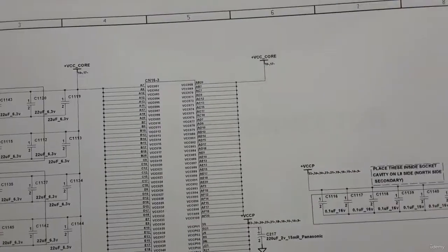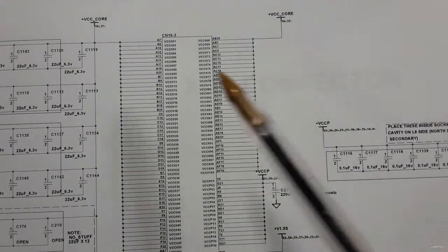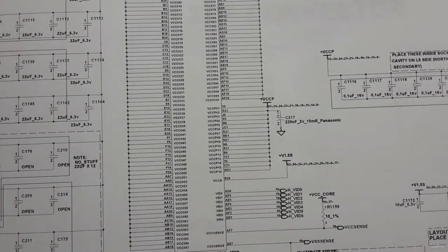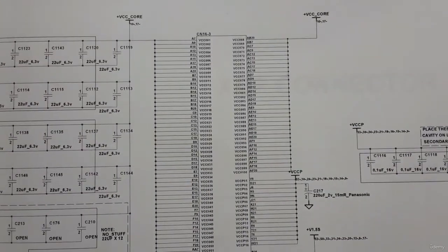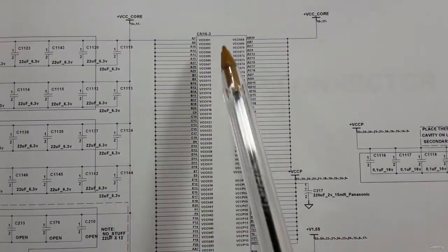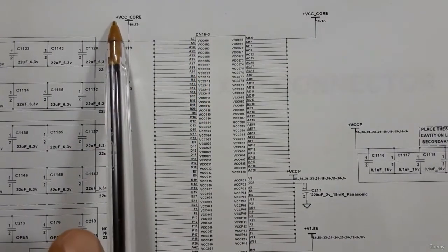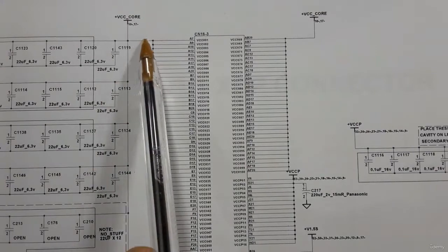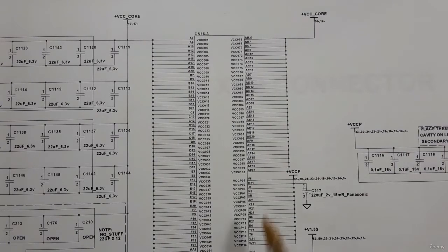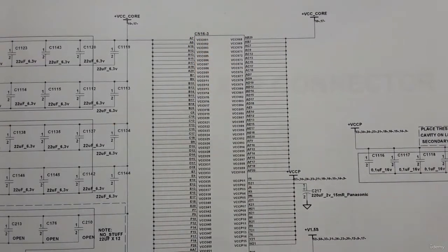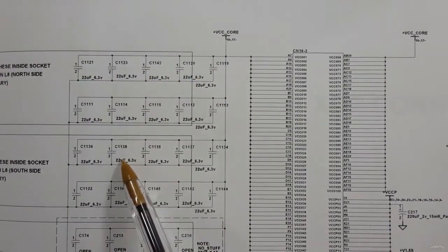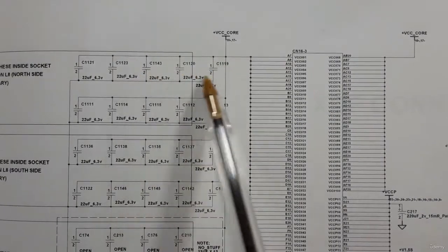Here is the third part of the processor. This part is designed just for power — all these pins are connected to power. This is the main power: +VCC core, applied to all these pins. Many ceramic capacitors are present here; these are filtering capacitors connected directly to the processor.